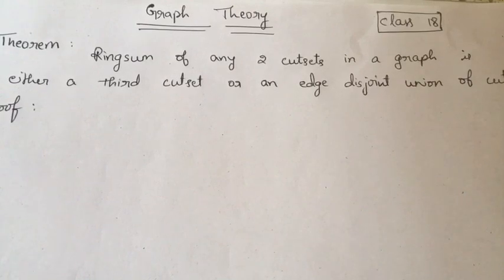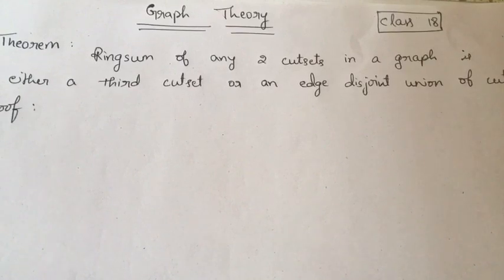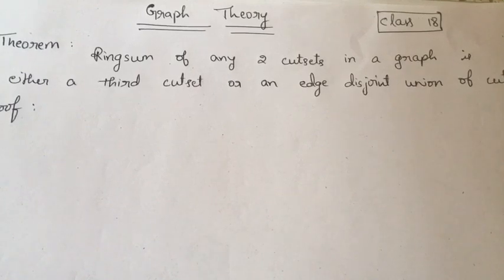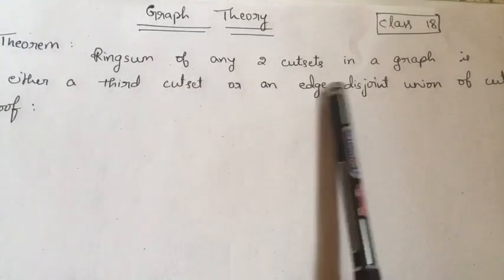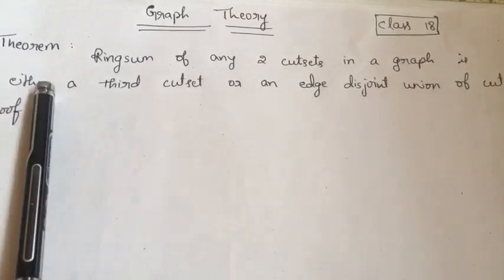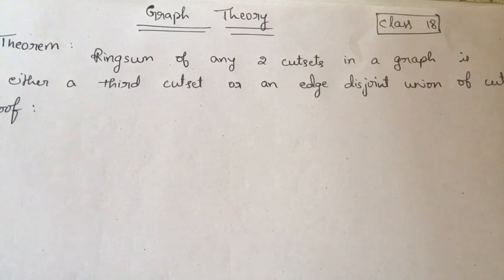Today, I am going to discuss one more important property of cut sets, that is the ringsum of two cut sets. The theorem says the ringsum of any two cut sets in a graph is either a third cut set or an edge disjoint union of cut sets.